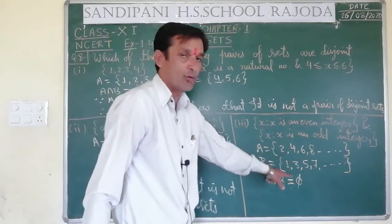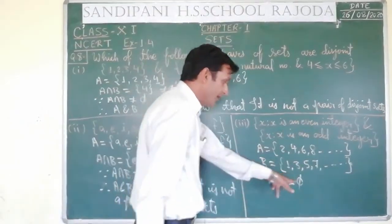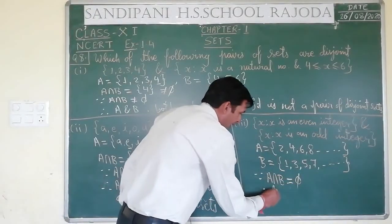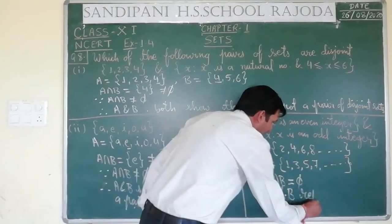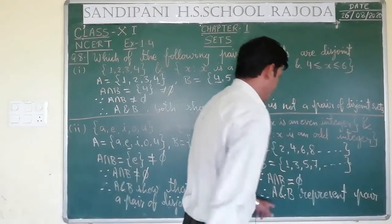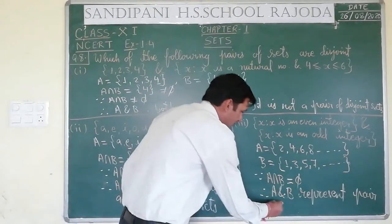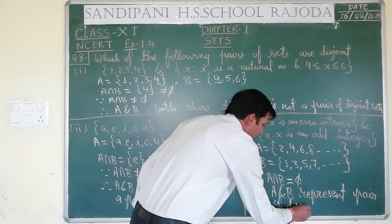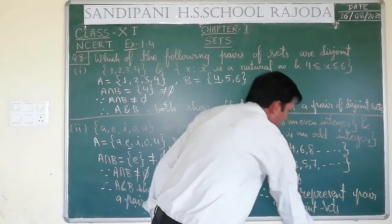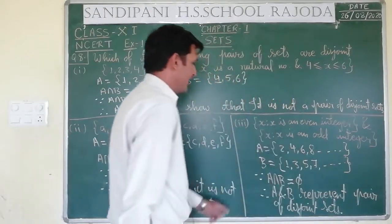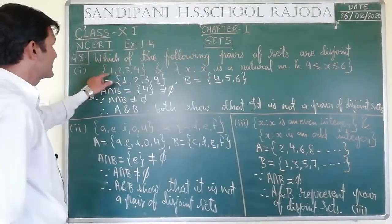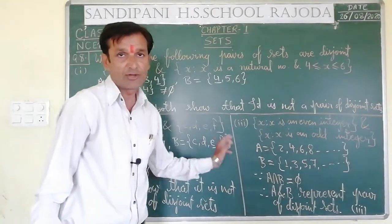A intersection B = empty set. Because A intersection B is equal to empty set — therefore A and B represent a pair of disjoint sets. A and B together form a pair of disjoint sets. So our answer here is the third option — third is showing the pair of disjoint sets. So this question is over.